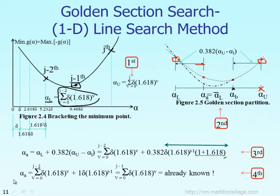You summarize it by looking at the picture on the right. Here is your alpha lower bound function value, here is the function value at alpha A, and here is the function value at alpha B. All you have to do is compare: is the function value at alpha A bigger or smaller than the function value at alpha B?